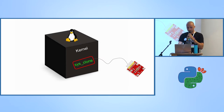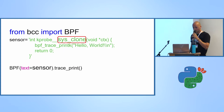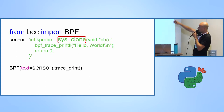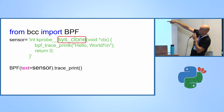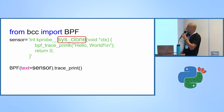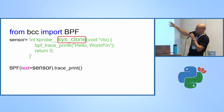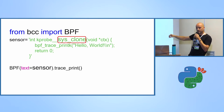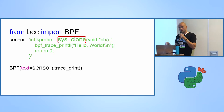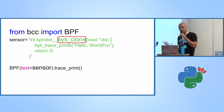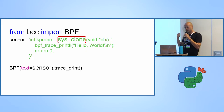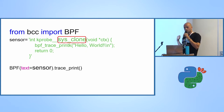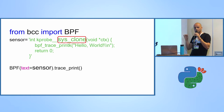Here's an example using the BCC Python module. This is our sensor — and we just print 'hello world' every time any process in the system is spawned. Obviously this is a very simple example, but I hope you get an idea of what it means to write your own eBPF sensors.